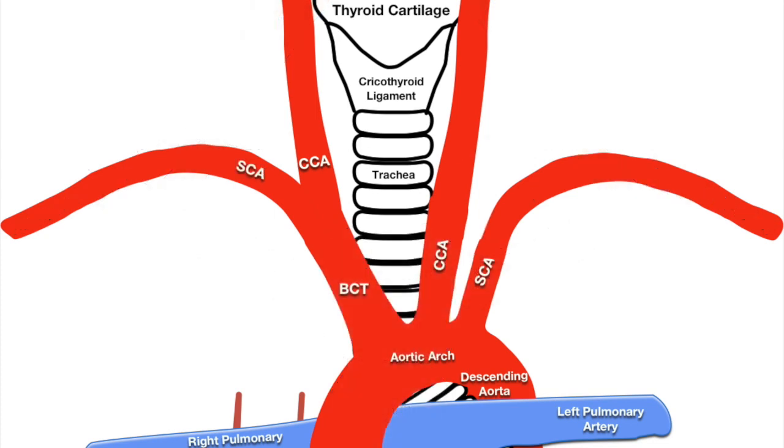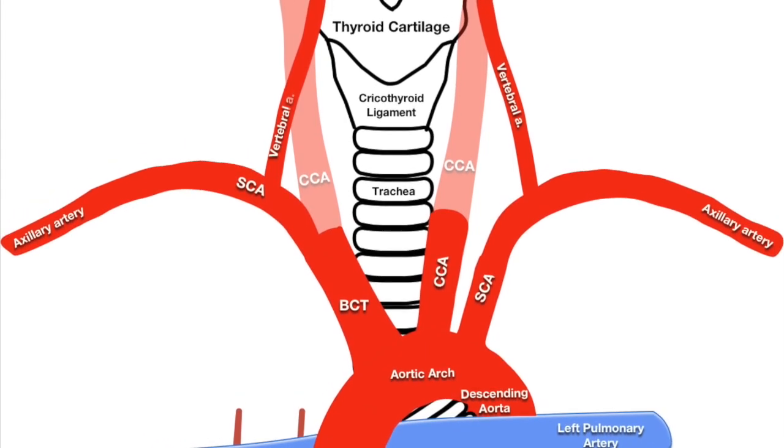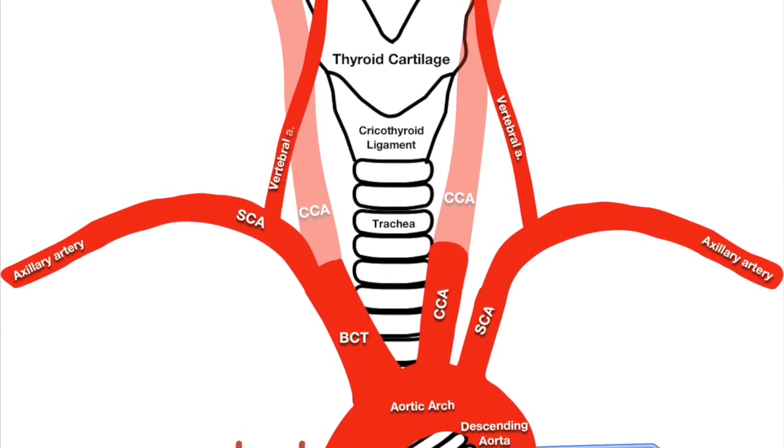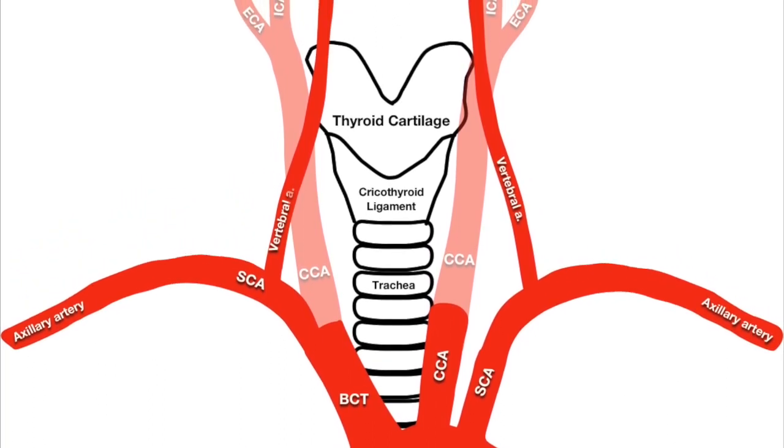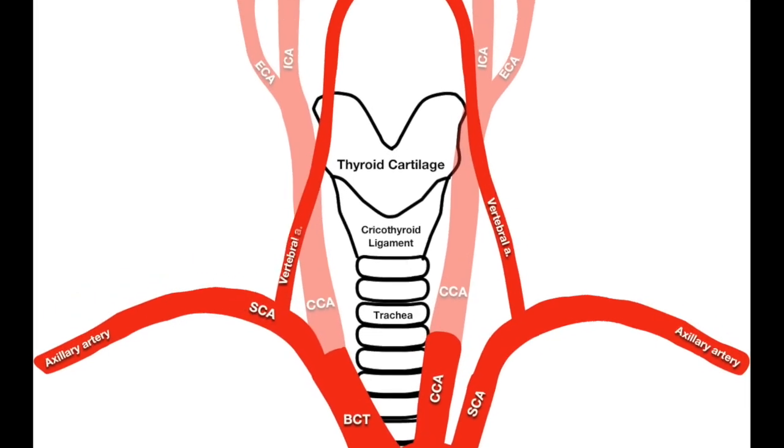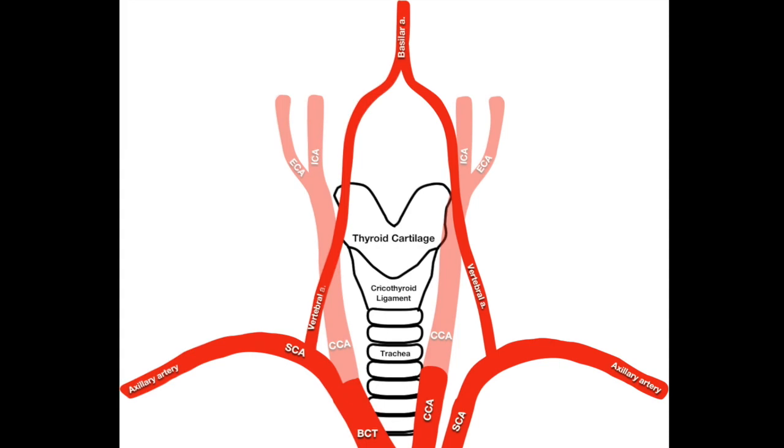The subclavian artery is traditionally described to have four branches and these mainly come off the first and second parts. The first branch to come off the first part of the subclavian artery is the vertebral artery. This enters the transverse foramen of the C6 vertebra and ascends to C1, giving branches to the neck muscles and spinal cord as it does so. After entering the cranium through the foramen magnum, it unites with the contralateral vertebral artery to form the basilar artery which contributes to the circle of Willis.